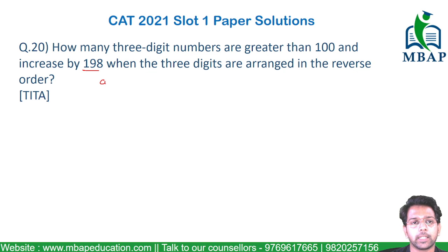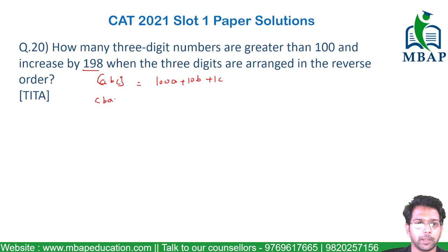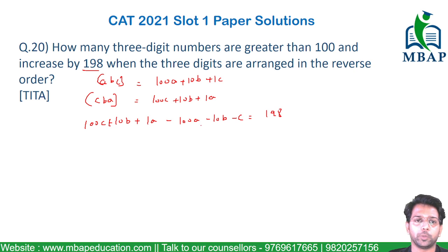Let's take this number as ABC. Its value will be 100A + 10B + 1C. If you reverse this, the number becomes CBA, which equals 100C + 10B + 1A. The difference — 100C + 10B + 1A minus 100A + 10B + C — should be equal to 198.